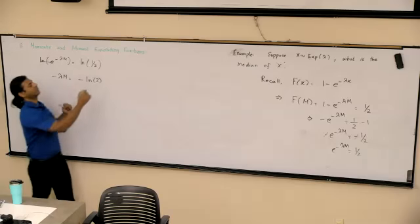So what happens to those two? What would that equal to? Ln of one is zero. So minus Ln of two. This is the quotient rule. Negatives go away. So the median is simply Ln of two divided by lambda.